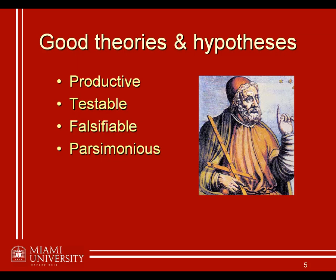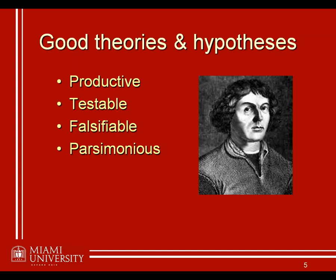Then Copernicus came along and developed a much simpler explanation. He simply said: what if the Earth isn't the center of the universe? If the Sun is the center, this provided a much more elegant and simpler explanation for the exact same observations. It didn't take 30 books — sure, it still took like six chapters — but it was a much simpler explanation and one we know today to actually be the correct description of the universe.